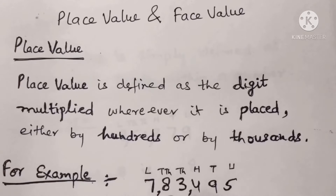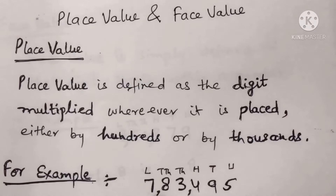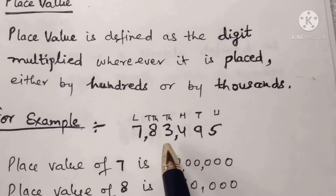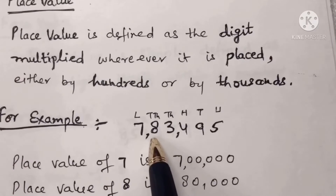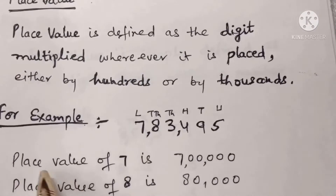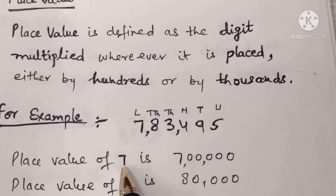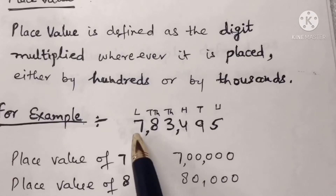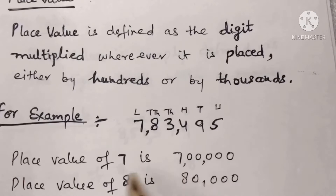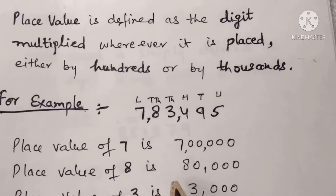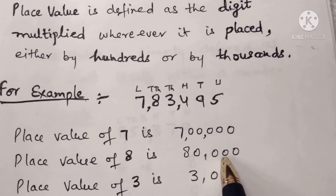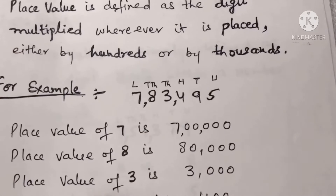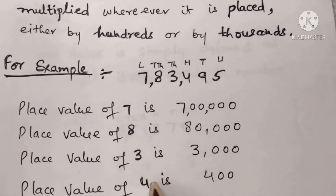The place value of seven is seven lakh, because seven is at the lakh place. The place value of eight is eighty thousand, because eight is at the ten thousand place.